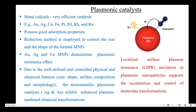The electron cloud of the metal nanoparticles oscillates at the frequency of the incident light — this is called surface plasmon resonance. Due to well-defined and controlled physical and chemical features, the monometallic plasmonic catalyst exhibits enhanced plasmon-mediated chemical transformations. The localized surface plasmon resonance excitation in plasmonic nanoparticles supports the acceleration and control of molecular transformations.